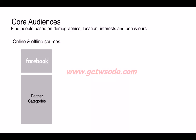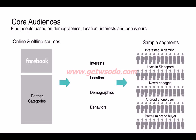Core audiences means finding people based on demographics, location, interests, and behaviors. Facebook has its own data and also uses partner categories. Combining these two sources, Facebook has information on the interests, locations, demographics, and behaviors of all its users. For example, Facebook knows which users are interested in gaming, which live in Singapore, which are newly engaged, which use Android or Apple phones, and which are premium brand buyers — and you can use these selection filters to show your lead ads only to those people.